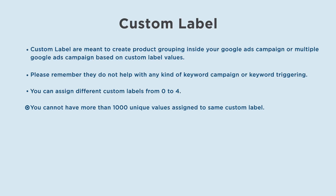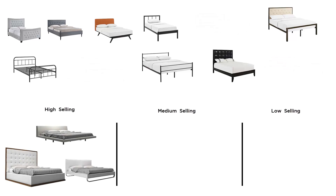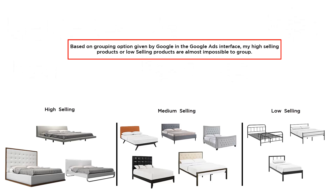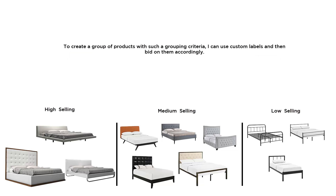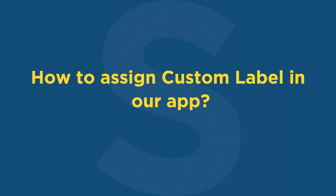For example, this is a typical case where I am selling beds. I have products where some are high-selling items, some are medium-selling, and some are low-selling. In this case, based on the grouping options given by Google in the Google Ads interface, my high-selling or low-selling products are almost impossible to group. To create a group of products with such a grouping criteria, I can use custom labels and then bid on them accordingly. Now let's look at an example of how to assign a custom label in our app.